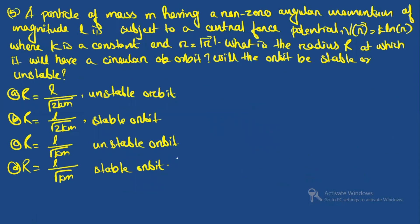Question five: a particle of mass m with non-zero angular momentum of magnitude L is subject to a central force potential V(r) = k·ln(r), where k is a constant and r = |r|. Find the radius at which it will have a circular orbit and determine whether the orbit is stable or unstable.